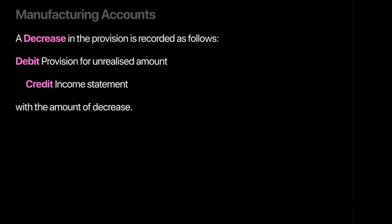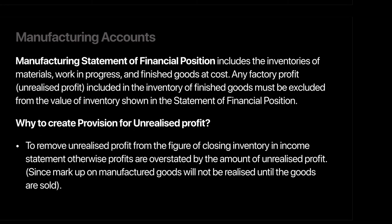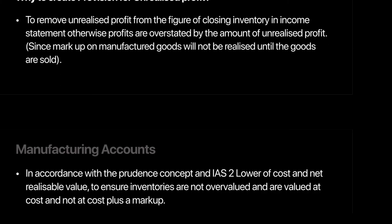Inventories should always be valued at cost in the statement of financial position; any element of profit must be removed. We create a provision for unrealized profit account to eliminate factory profit included in inventories that has not yet been realized. This is also required by IAS 2, which states inventory should be valued at the lower of cost or net realizable value, ensuring assets and profits are always understated.